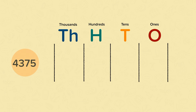Let's have a look at this number here. This number is 4,375. This number has got four thousands, three hundreds, seven tens and five ones.